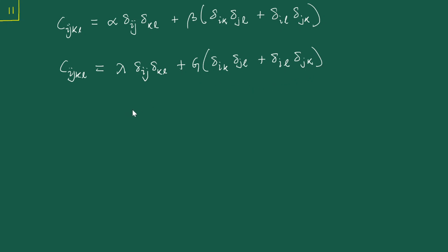Now if we use this particular relationship in the material behavior equation sigma_ij = C_ijkl * epsilon_kl and substitute the expression for C_ijkl, let's see what happens.